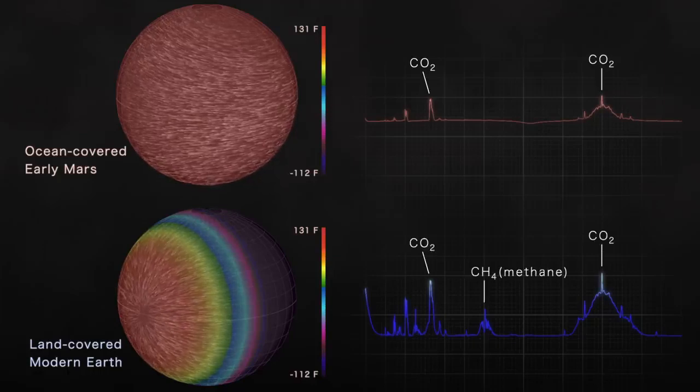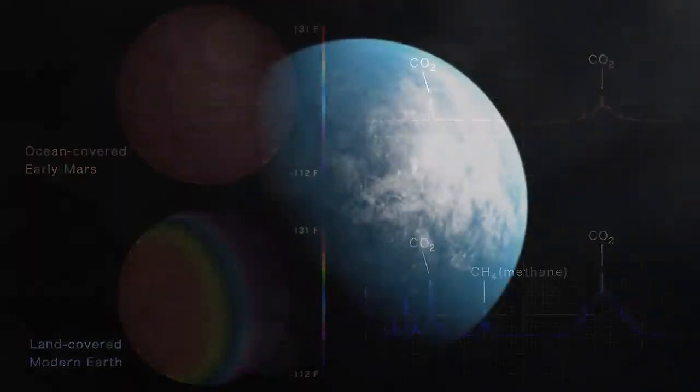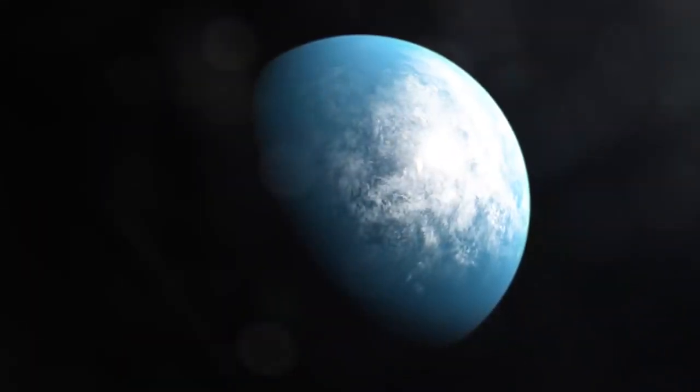By simulating these data now, scientists can make predictions for real future observations and narrow the range of TOI-700d's possible conditions.